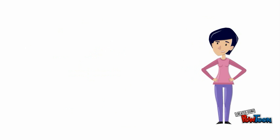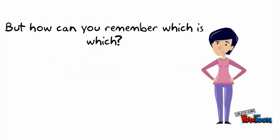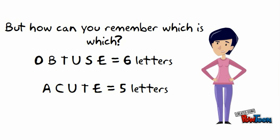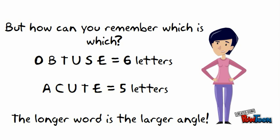But how can you remember which is which? Obtuse is spelled O-B-T-U-S-E, and it's six letters long. Acute is A-C-U-T-E, and it's five letters long. The longer word is the larger angle.